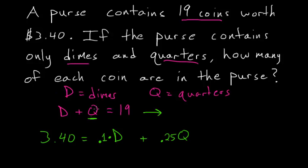Subtracting d from each side, we have quarters equal to 19 minus dimes. Taking this new equation, we can substitute it into the second one wherever we see quarters.